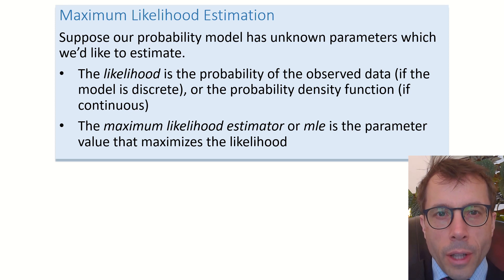We're supposing that our probability model has unknown parameters which we'd like to estimate. First, write down the likelihood, which is just the probability of seeing the data that we actually did see. The model has parameters, so the likelihood must depend on those parameters. Then, we just do the obvious thing and choose the parameter values that maximize the likelihood. The optimum set of parameters is called the maximum likelihood estimator, or MLE.